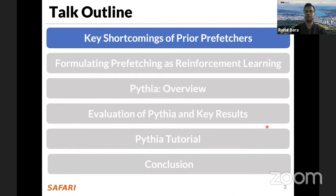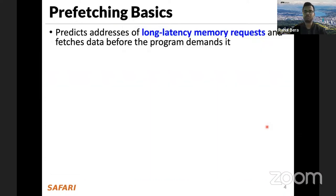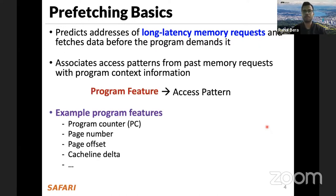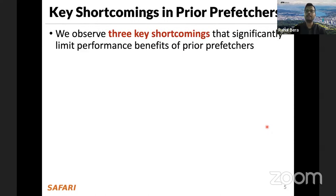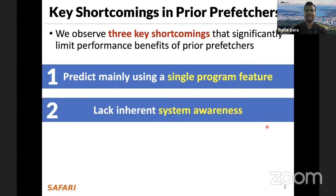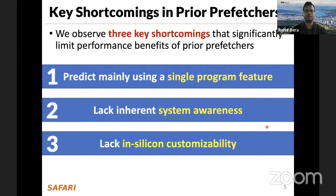Prefetching is a speculative technique that predicts the address of long-latency memory requests and fetches data before the program demands it. For prediction, a prefetcher associates program access patterns from past memory requests with program context information, called a program feature. Examples include program counter value, page number, page offset, cache line delta, or combinations thereof. We identified three key shortcomings limiting prior prefetchers: single program feature use, lack of system awareness, and lack of in-silicon customizability.